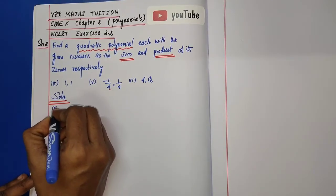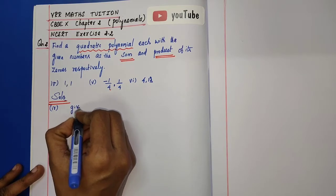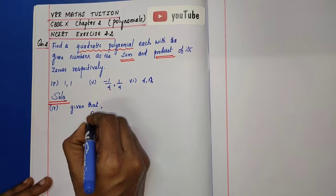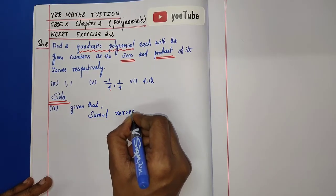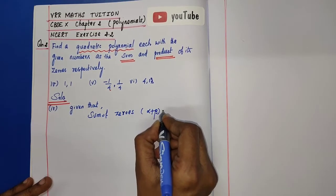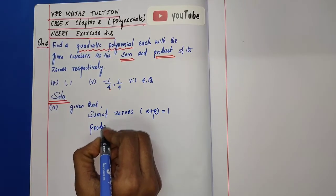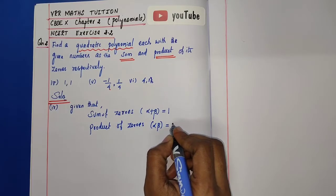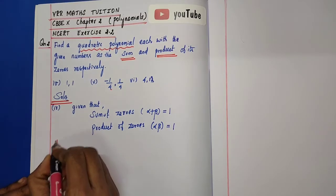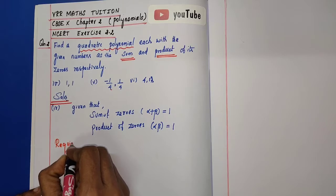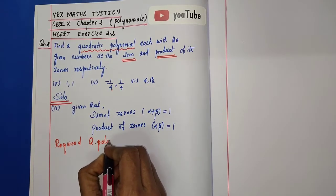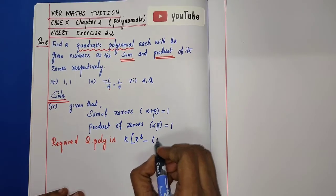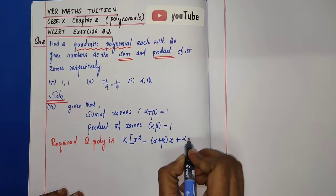For sub-question 4: the first number is the sum of zeros and the second number is the product of zeros. Sum of zeros, alpha plus beta, equals 1. Product of zeros, alpha times beta, equals 1. We have to form the quadratic polynomial. The required quadratic polynomial is: k[x² minus (sum of zeros)x plus (product of zeros)].